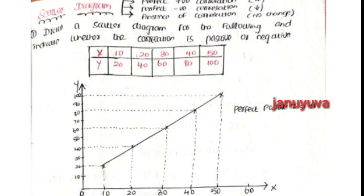For example, on the X-axis: 0, 10, 20, 30, 40, 50, 60. Similarly, the same divisions on the Y-axis. Now, the first value — X-axis is 10, Y-axis is 20, so plot the point (10, 20). Next, X is 20, Y is 40. Then X is 30, Y is 60. Then X is 40, Y is 80. Similarly, X is 50, Y is 100. Plot all these points on the graph.